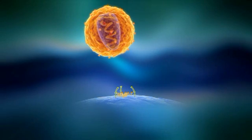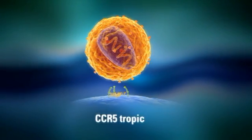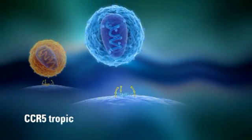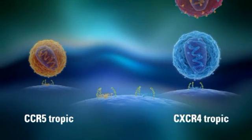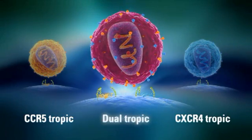Viruses that bind exclusively to CCR5 for cell entry are known as R5-tropic viruses. Viruses that bind exclusively to CXCR4 for cell entry are known as X4-tropic viruses. And viruses that utilize either co-receptor are known as dual-tropic viruses.